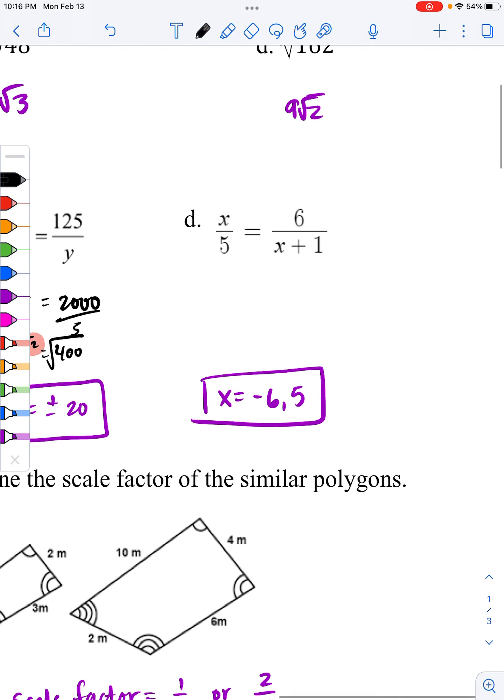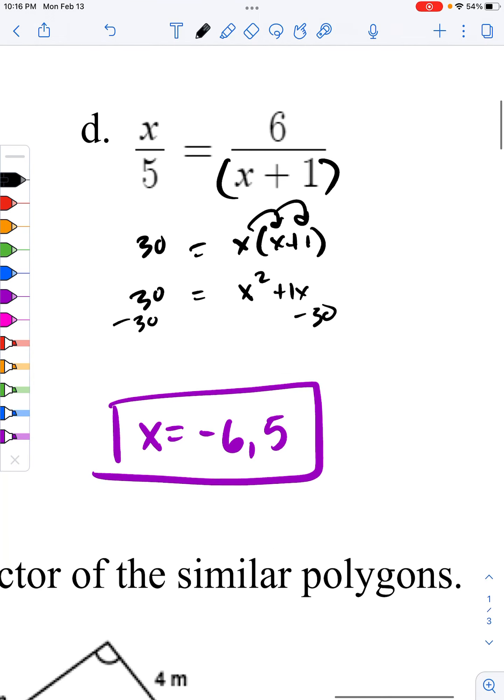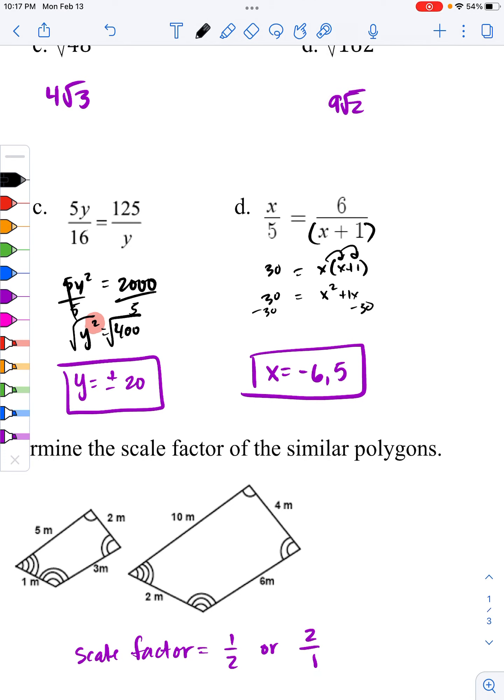Okay, and then d, you should cross multiply this, and just like we mentioned before, any time you have a plus or minus in the numerator or denominator, you should put parentheses around it. So in reality, we have x times x plus 1 is equal to 5 times 6 is 30. Distributing this improperly, you should get x squared plus 1x is equal to 30 minus 30. And this just becomes a factoring problem.